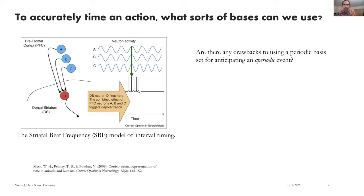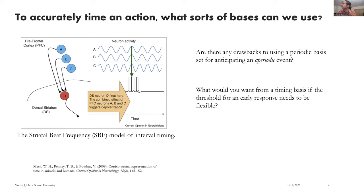A lot of neurons are quite nonlinear — not spiking then suddenly spiking — not particularly sinusoidal. Maybe the overall firing rate could be mimicked by a sinusoid, but you're moving out of the domain where timing is clear, into a much smoother version where you have the non-monotonicity problem and many others.